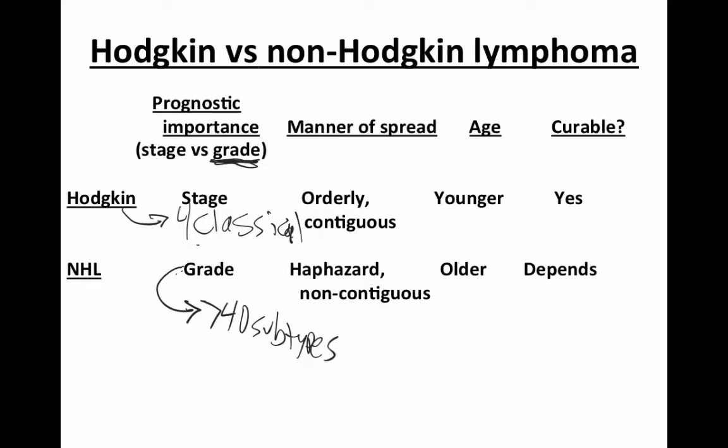Again, stage for stage, within the four subtypes of classical Hodgkin lymphoma, the prognosis and treatment is the same.